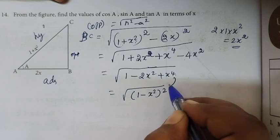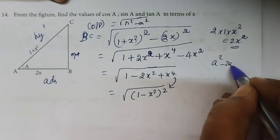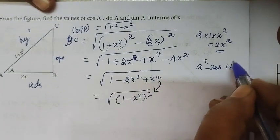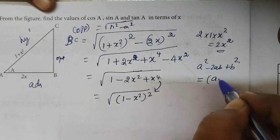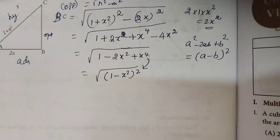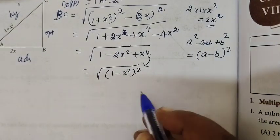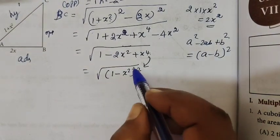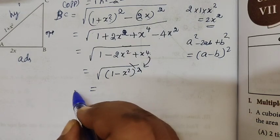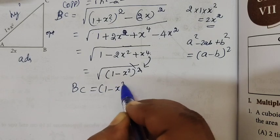This is in the form a² minus 2ab plus b², which equals a minus b whole squared. So x⁴ minus 2x² plus 1 equals (x² minus 1)² or (1 minus x²)². Taking the square root and cancelling, therefore BC equals 1 minus x².